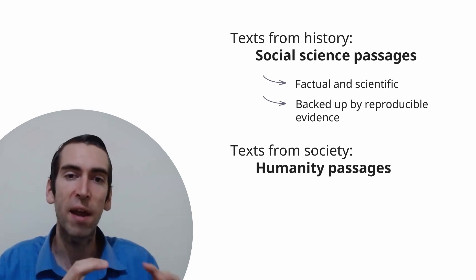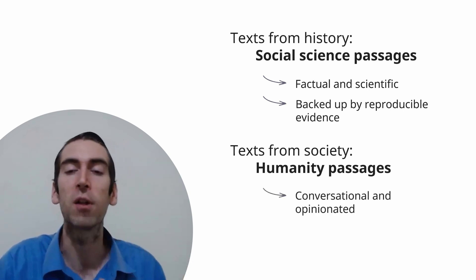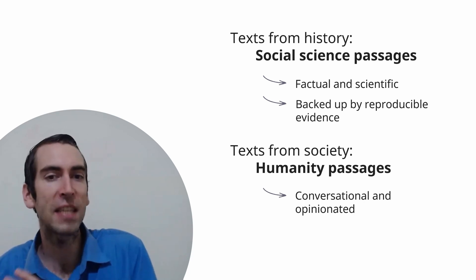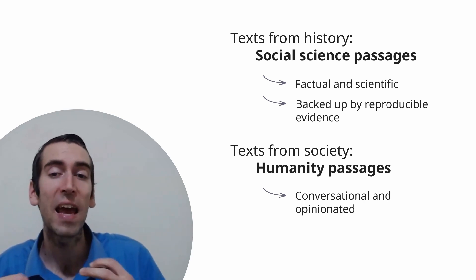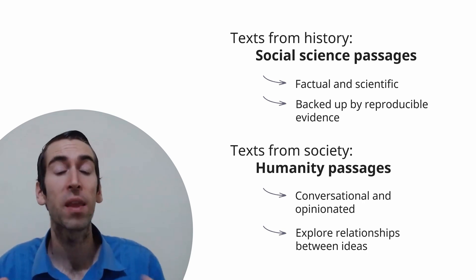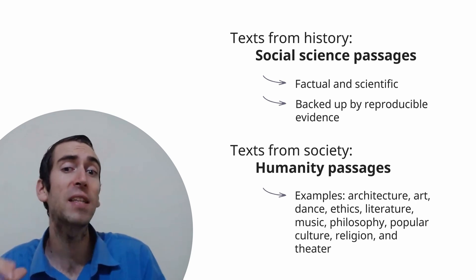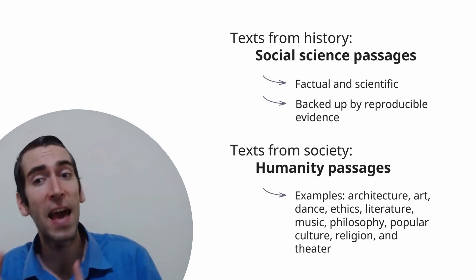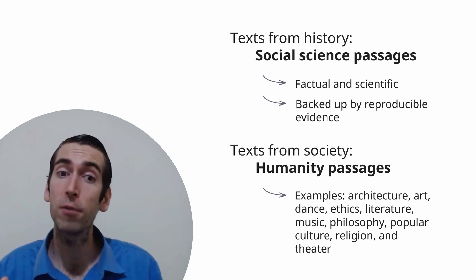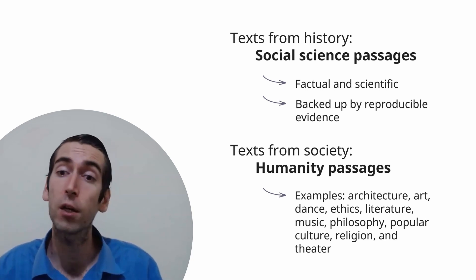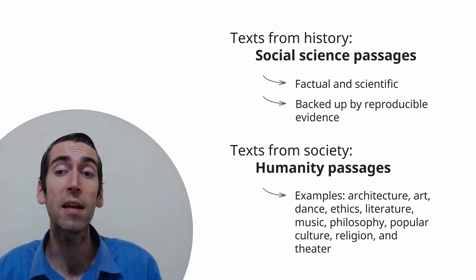Humanities passages, on the other hand, are more conversational and opinionated in style. They are less likely to set out to establish fundamental facts as they are to explore relationships between ideas. If you are given a CARS passage that discusses architecture, art, dance, ethics, literature, music, philosophy, popular culture, religion, or theater, it is likely a humanities passage.